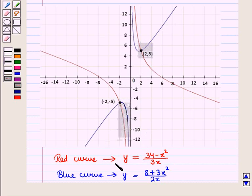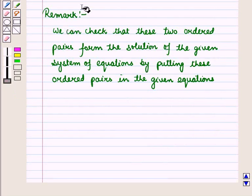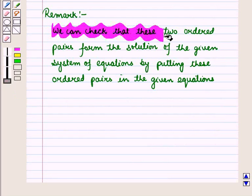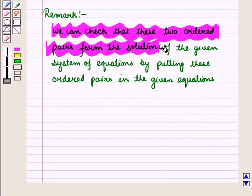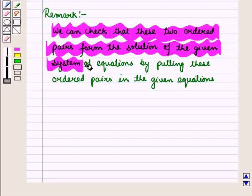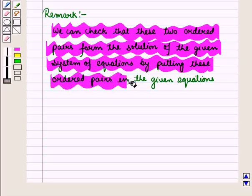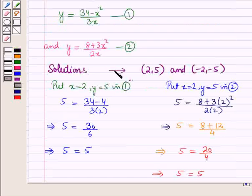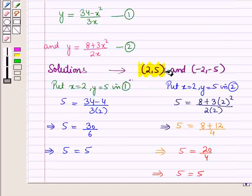Thus, the solution of the given system of equations is given by the ordered pairs (2, 5) and (−2, −5). We can also check that these two ordered pairs form the solution by substituting them into the given equations.